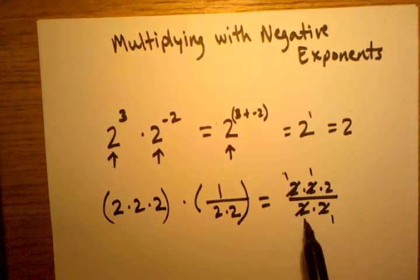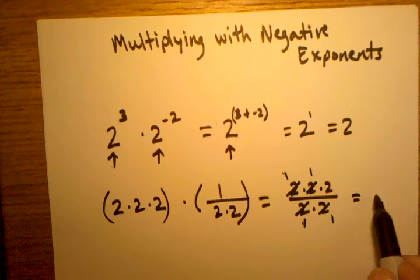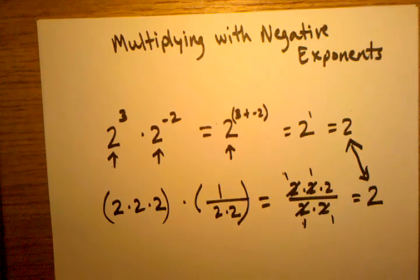because we know that 2 divided by 2 is the same thing as 1, and another 2 divided by 2 is the same thing as 1. Now we're left with one 2 left over, which is the same thing as 2. And you can see we did get the same answer when we solved it that way.